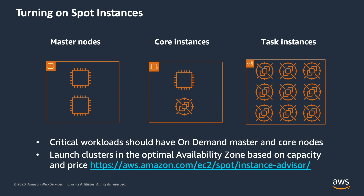You can turn on spot instances for master nodes, core nodes, or task nodes. However, critical workloads should have on-demand master and core nodes. You can launch clusters in the optimal availability zone based on capacity and price through the spot instance advisor. EMR also allows you to launch instances in what is called instance fleets, which let you mix and match instance types and spot versus on-demand. You specify a target capacity as a mix of up to five instance types, and EMR will fulfill that capacity from the most suitable pools, automatically replacing interrupted or failed instances.